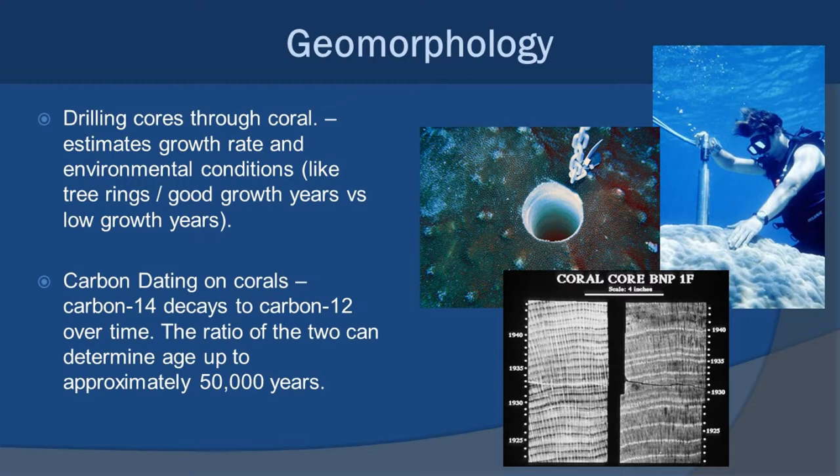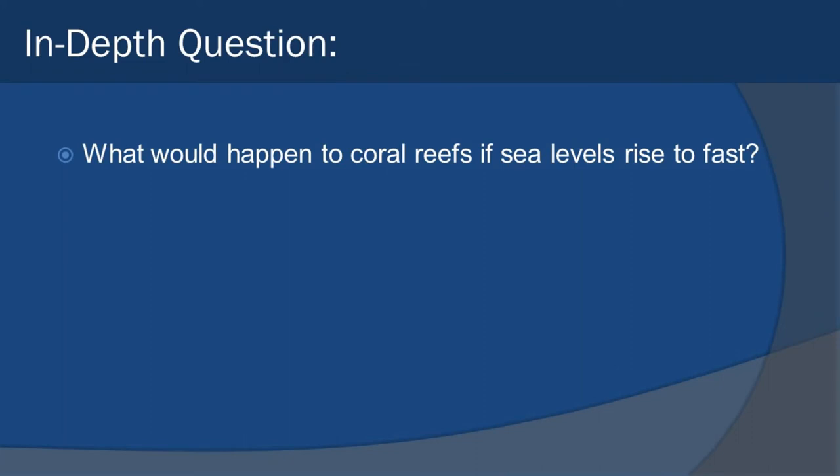In terms of short-term geology, we can get an idea of what the oceans were like using coral cores. You might say 50,000 years is not short-term, but to geologists, it really is — humans live a very short lifespan compared to the geologic history of the Earth. Your in-depth question today is: what would happen to coral reefs if sea levels rise too fast? Think about that, remember to do your summary notes, and we'll see you next time.